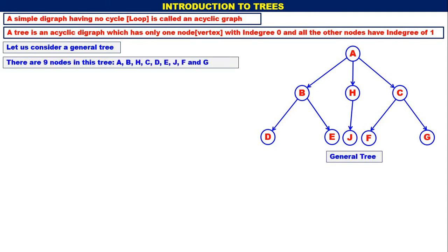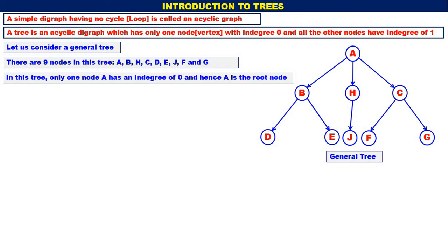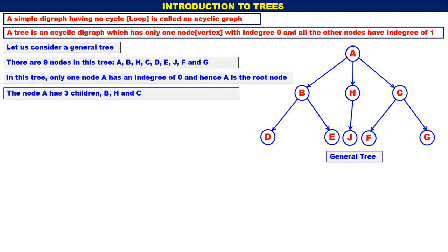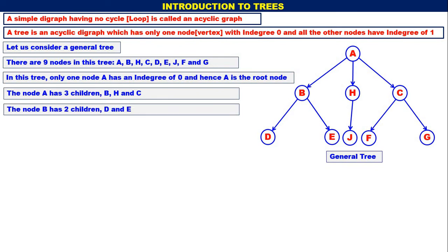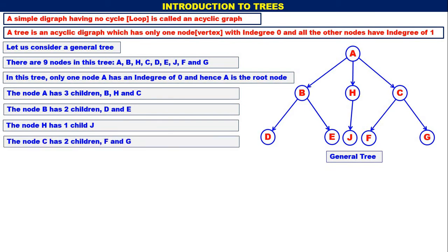There are 9 nodes in the tree: A, B, H, C, D, E, J, F, and G. In the tree, only one node has indegree 0, and hence A is the root — only A has indegree 0, that is the root node. A has 3 children: B, H, and C. B has 2 children: D and E. H has only one child: J. C has 2 children: F and G.